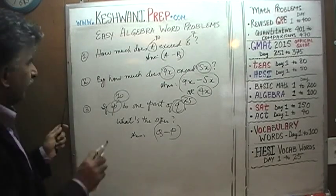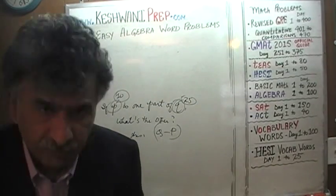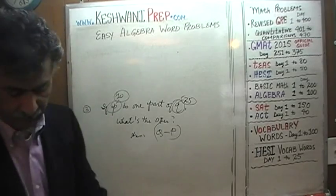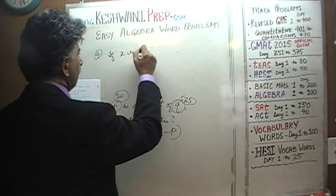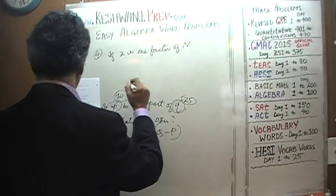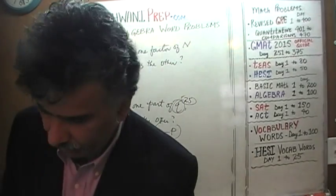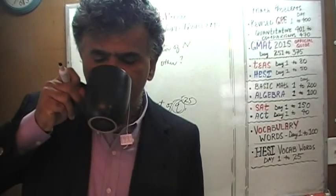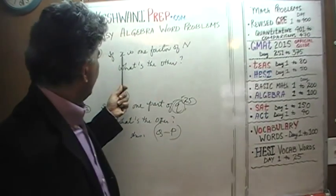Number 4: If x is one factor of n, what's the other? Pause the video and do it yourself. When plugging in numbers, it's always a good idea to avoid plugging in 0 or 1. Zero is dangerous because 0 times anything is 0, and 1 times anything is the number itself — neither one will help you evolve and understand the structure of the problem.